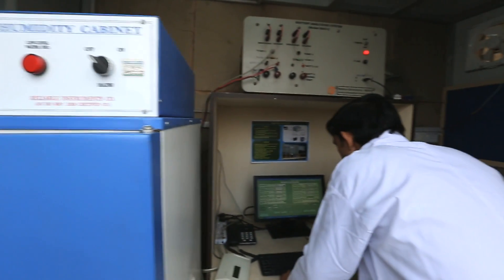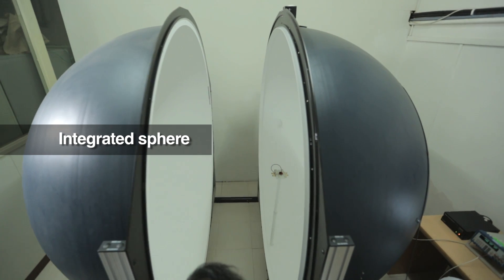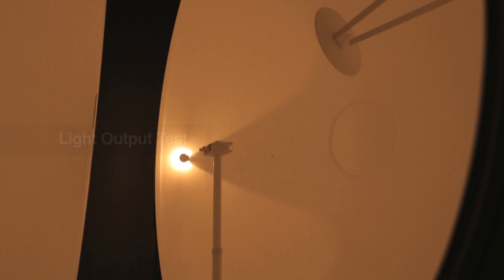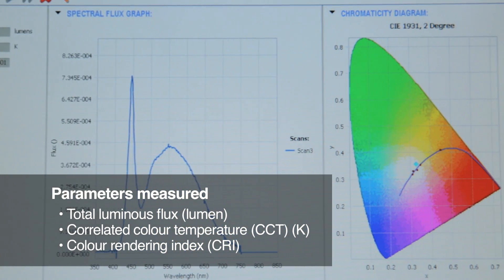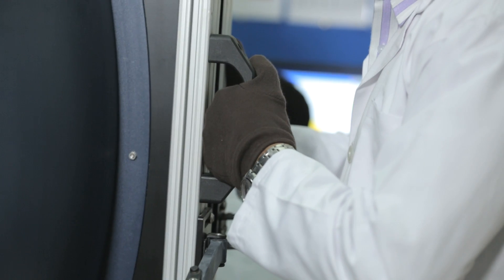The integrated sphere is used to assess parameters such as total luminous flux or lumen output, luminous efficacy, correlated color temperature, and color rendering index or CRI, which are very critical from the point of view of visual comfort.